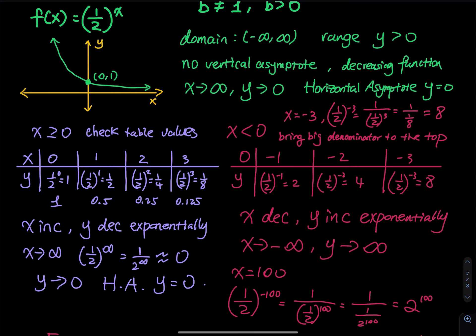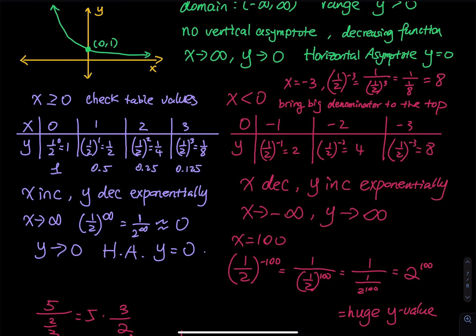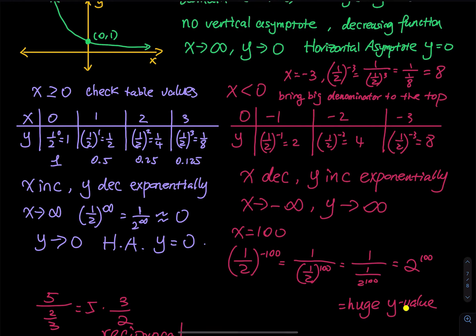As x approaches negative infinity, y approaches positive infinity. For example, when x = -100, you have (1/2)^(-100). You bring the whole thing to the denominator, getting 2^100, which is huge, and then flip it back to the numerator. The result is a very large value, which is why the graph goes all the way up as x goes to negative infinity.